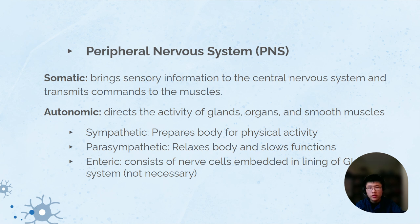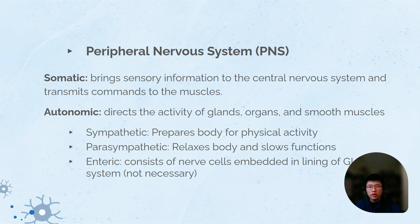Here is the peripheral nervous system in more depth. There's somatic and there's autonomic. Somatic brings sensory information to the central nervous system and transmits commands to the muscles. Meanwhile, the autonomic nervous system directs the activity of the glands, organs, and smooth muscles. Within autonomic, we have sympathetic, parasympathetic, and enteric — enteric, which you do not need to know, is basically for the lining of the GI system. The sympathetic nervous system prepares the body for physical activity, and parasympathetic relaxes the body and slows down functions.